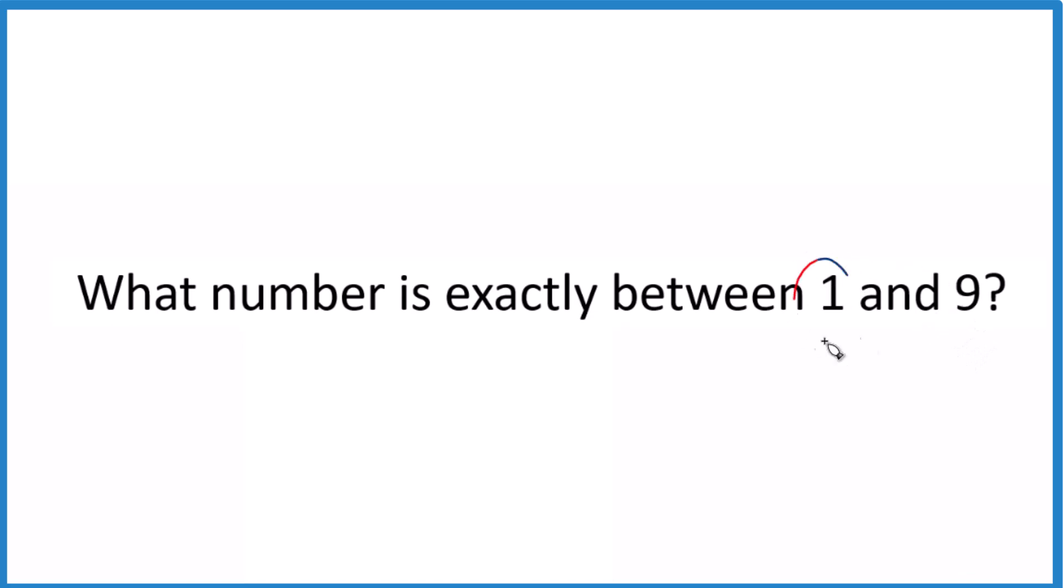But what I like to do is take the two numbers, add them together, and then just divide by two. So I'm taking the average. And when I do that, I find what number is exactly between one and nine.